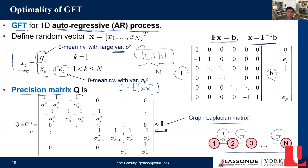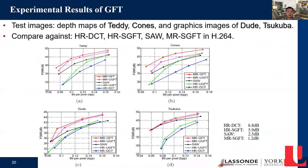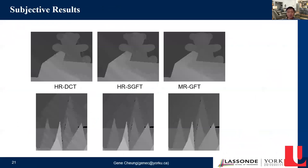The graph Fourier transform can do significantly better than DCT because you can adapt the transform to the statistics of your signal. By disconnecting sharp discontinuities within a block, you prevent filtering across sharp edges, so the reconstruction is much sharper than competitors. This demonstrates the advantage of signal-adaptive graph-based transforms in coding of depth maps and similar signals.